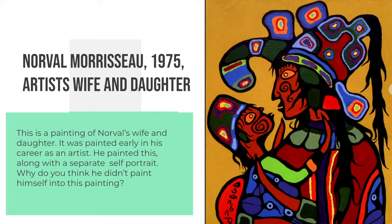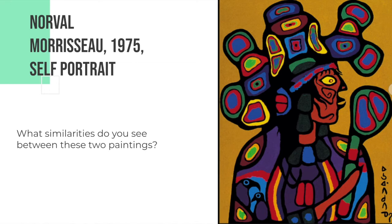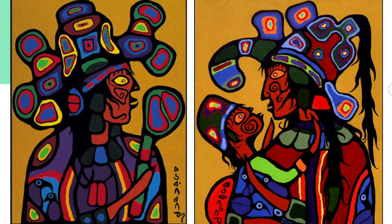Let's look at that self-portrait. Here is Norval Morisot's 1975 self-portrait. When I look at these two paintings, I see a lot of similarities — how about you? Let's put them both side by side and think about what kind of similarities we see between these two paintings. On the left we have Norval Morisot's self-portrait, and on the right we have Norval Morisot's wife and daughter.